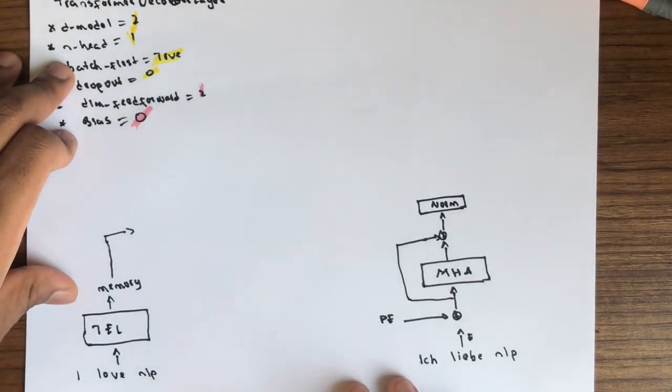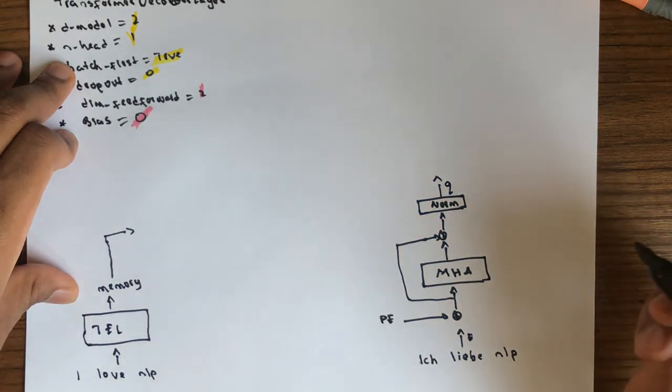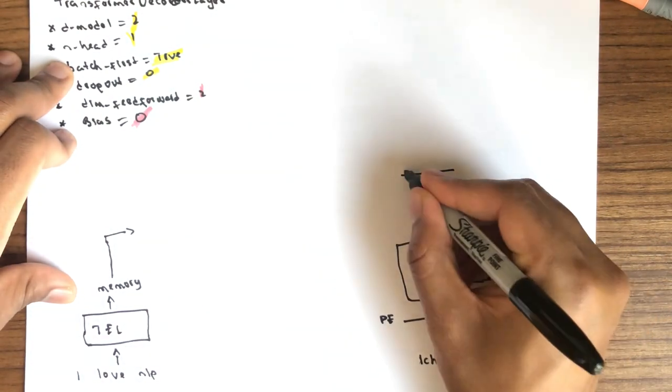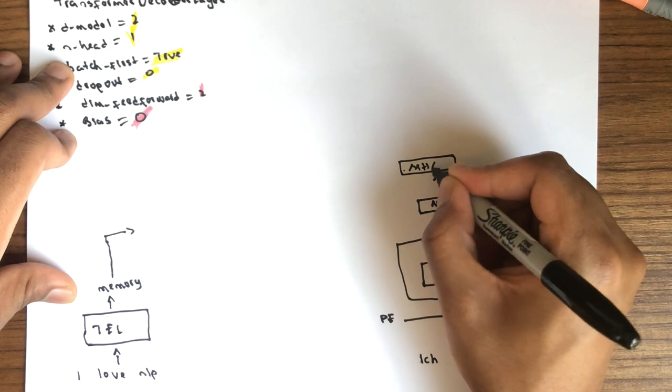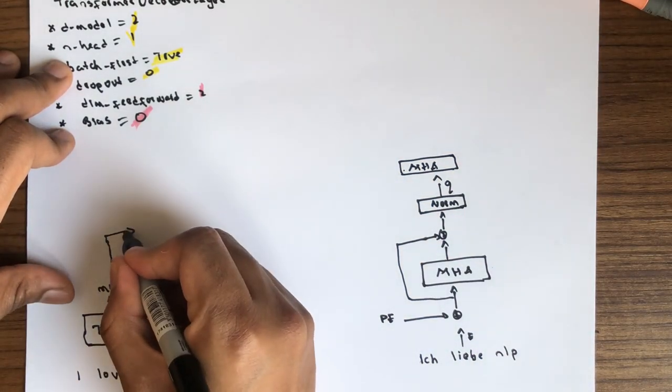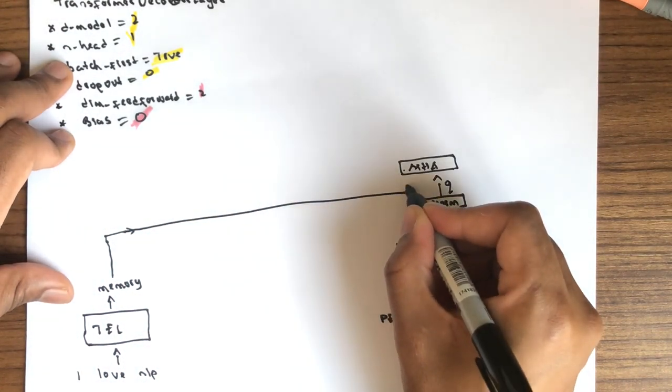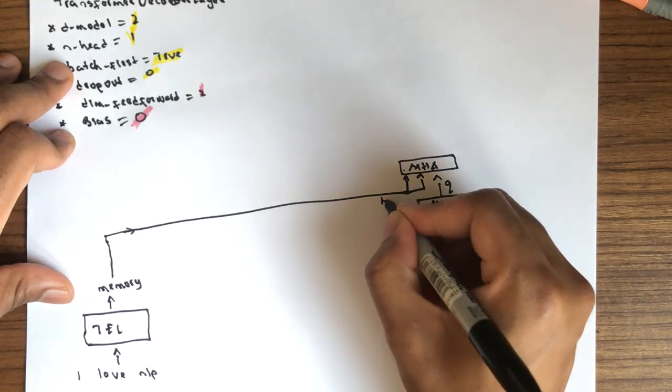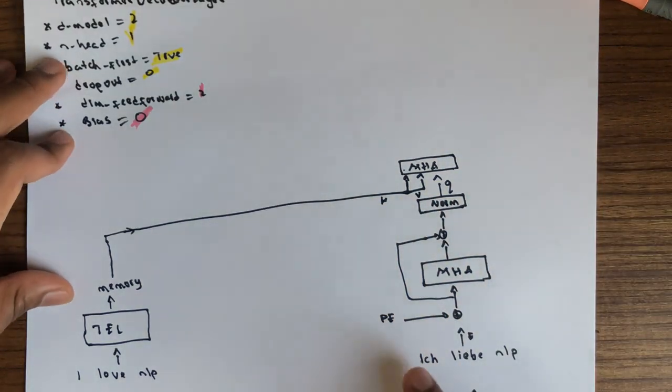Okay, this output is actually the query and goes through second multiple head attention. So this memory is actually going to be the key and value. So key, value, query go into the multi-head attention.